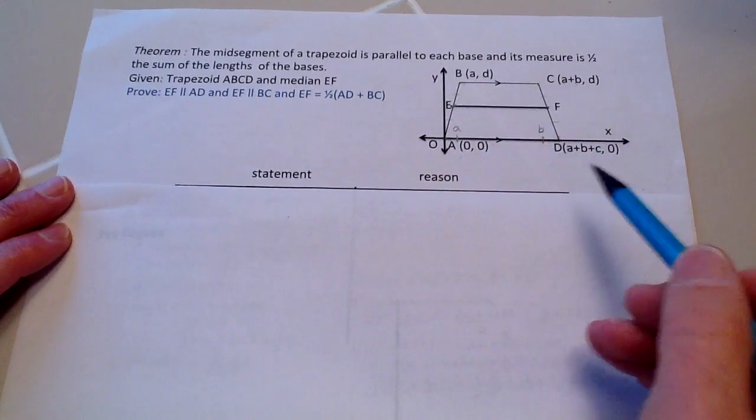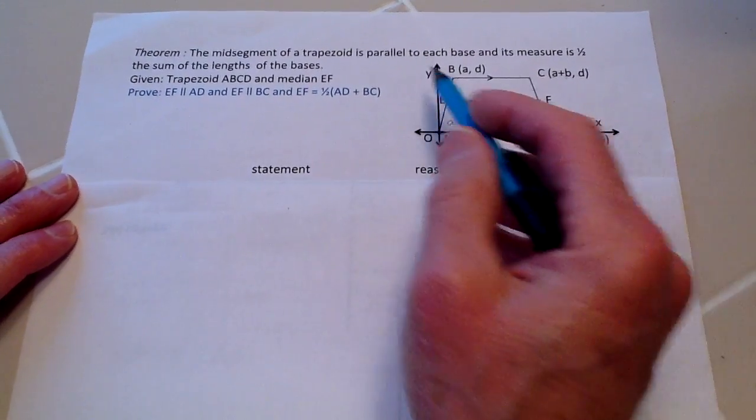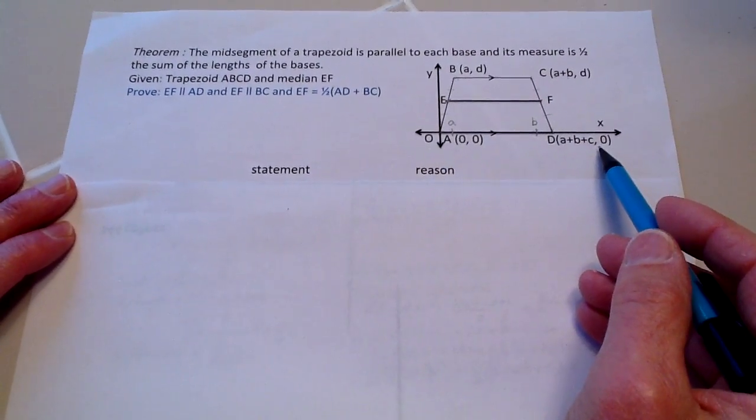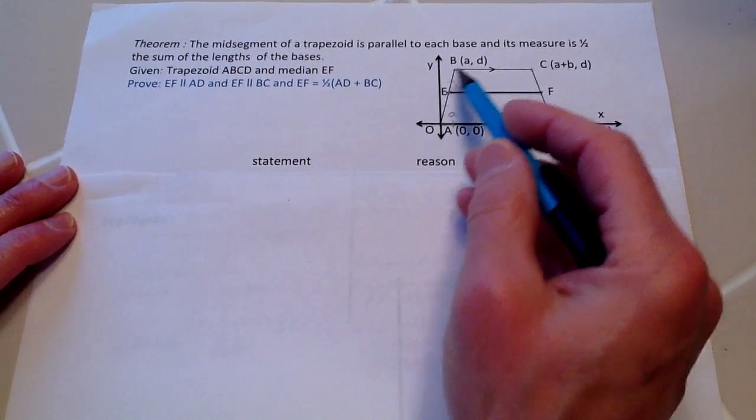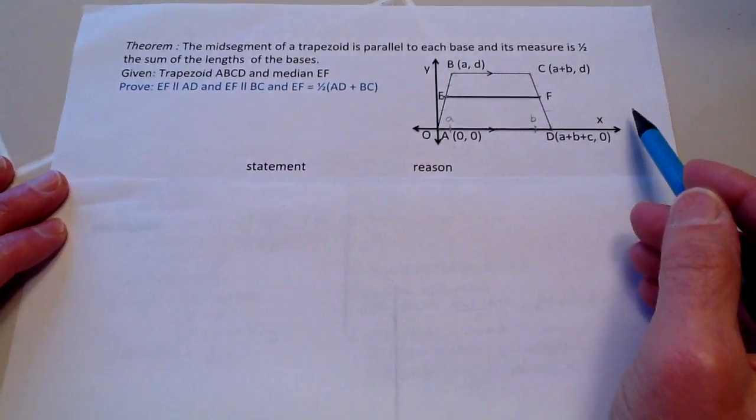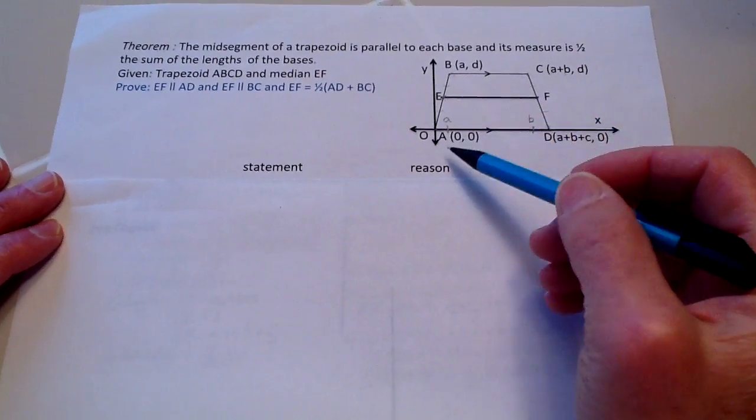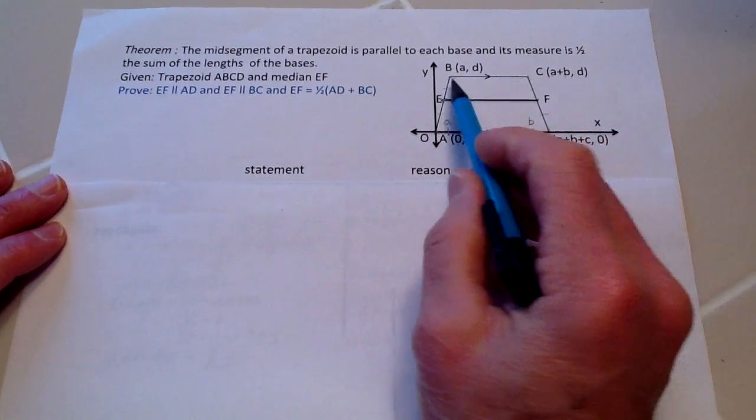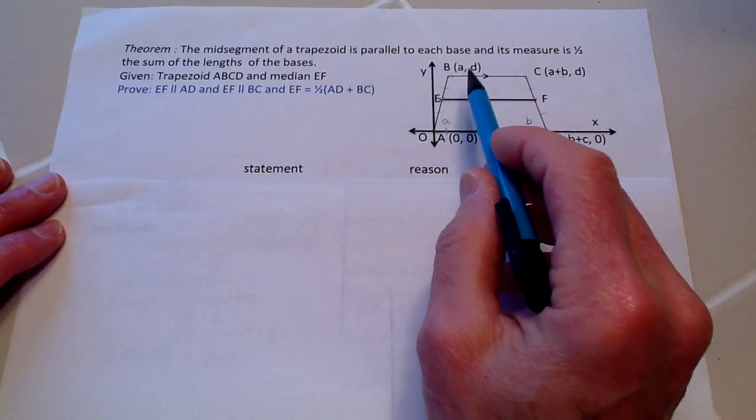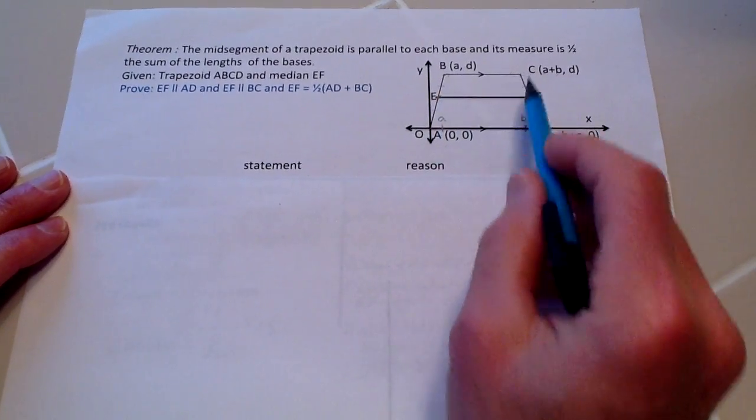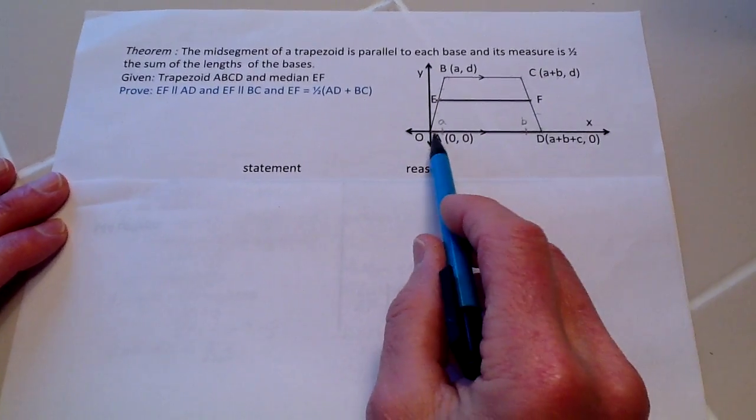So here is this sketch. I put this on an xy coordinate plane to help us be able to do the actual measurements so that we can measure these bases. But in essence, what they're looking at is saying that this line, because it's a trapezoid, we know that BC is going to be parallel to AD.